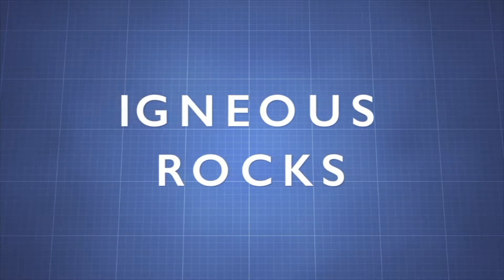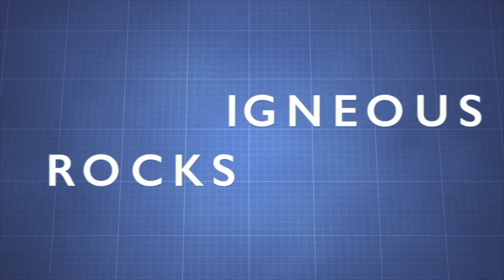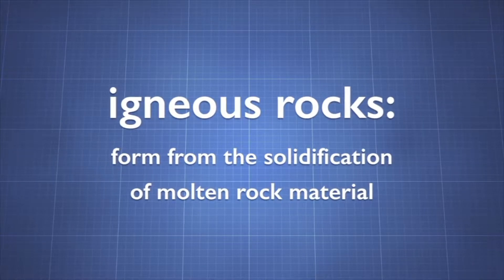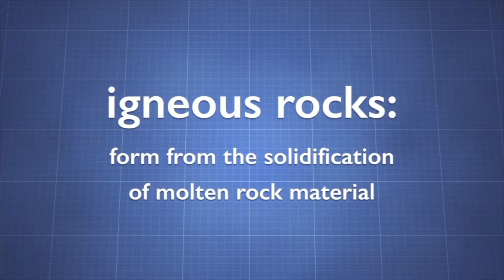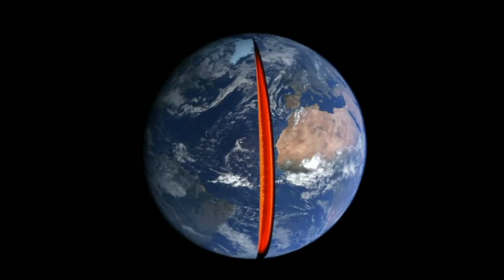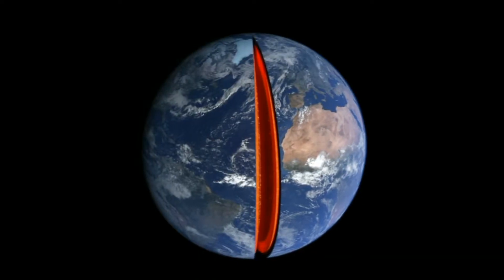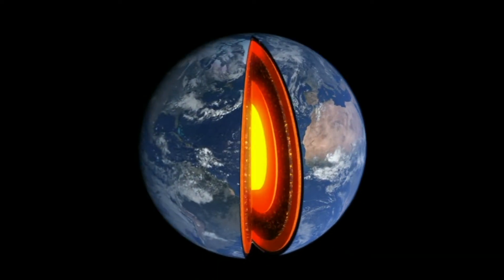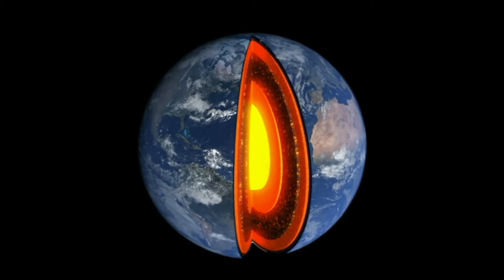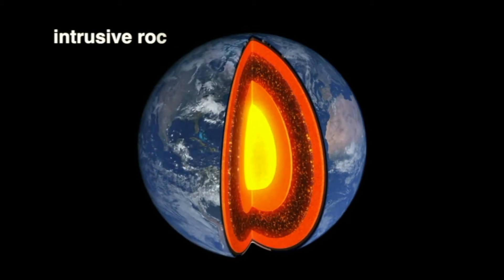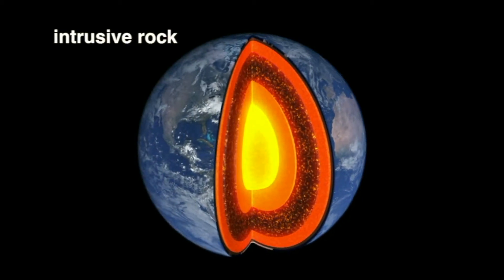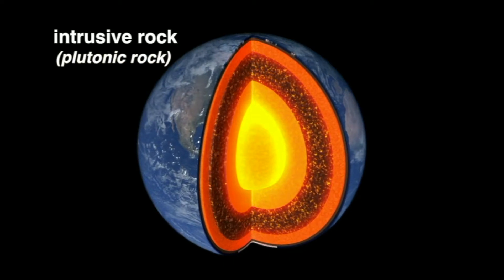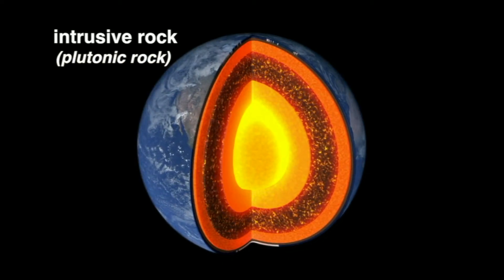Granite is just one of many different types of igneous rock. Igneous rocks form from the solidification of molten rock material. Granite is an igneous rock that forms when magma cools and solidifies deep beneath Earth's surface. Rocks that form in Earth's interior are called intrusive rocks. They're also called plutonic rocks, after Pluto, the Roman god of the underworld.